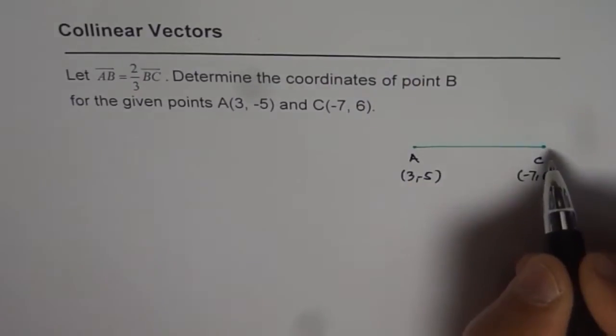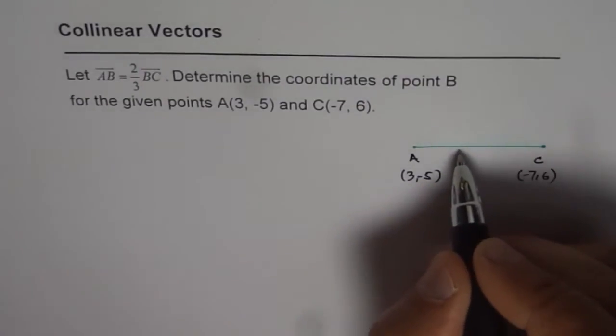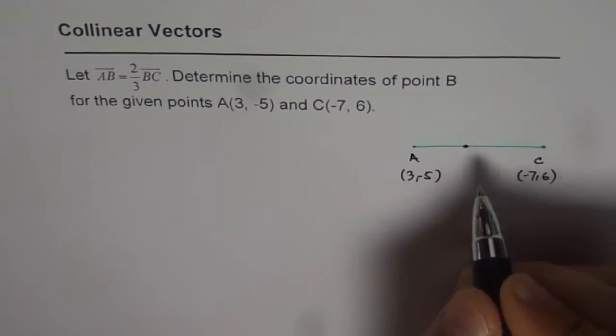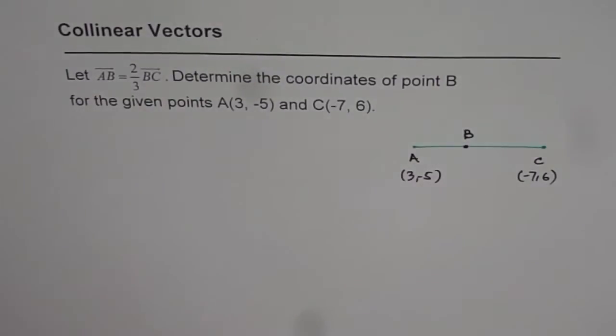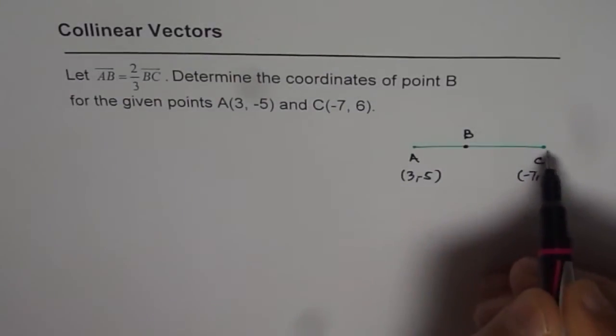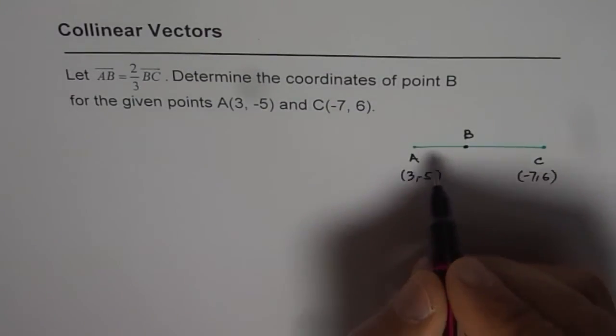And B is somewhere in between A and C, so that AB is 2 thirds. So B is less than half, somewhere here we have point B, so that B divides this line segment in the ratio of 2 to 3.